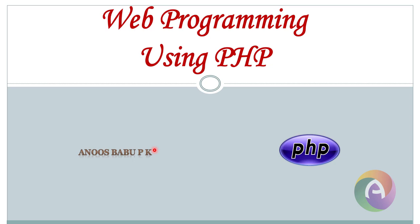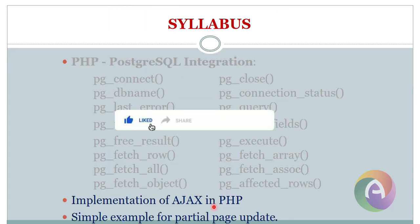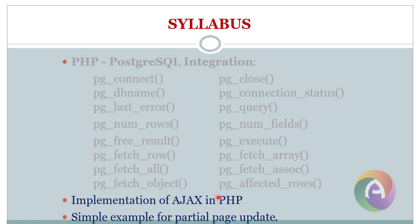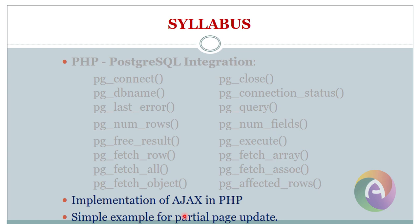Web Programming using PHP. PHP 5th module, Part 7. This is the last topic on Introduction to Ajax. This is how we learn the functions of database in PHP. This is the implementation of Ajax in PHP. This is a simple example.